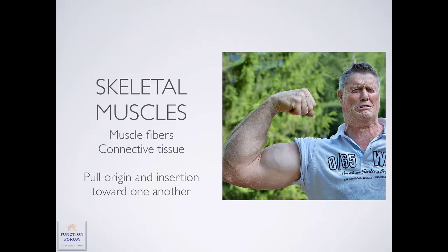Please remember that skeletal muscles are not intelligent. They can only pull the origin and the insertion closer together. We have multiple muscles that often cross multiple joints — the biceps being a good example, as it crosses three different joints. Therefore, when it contracts, it's going to move all three of those joints.